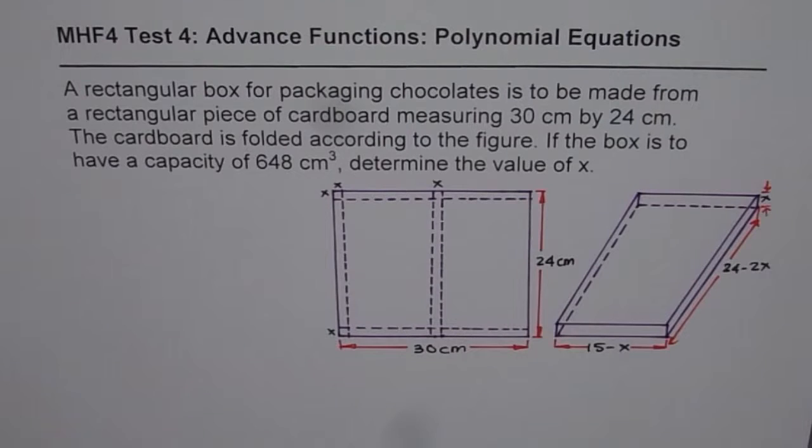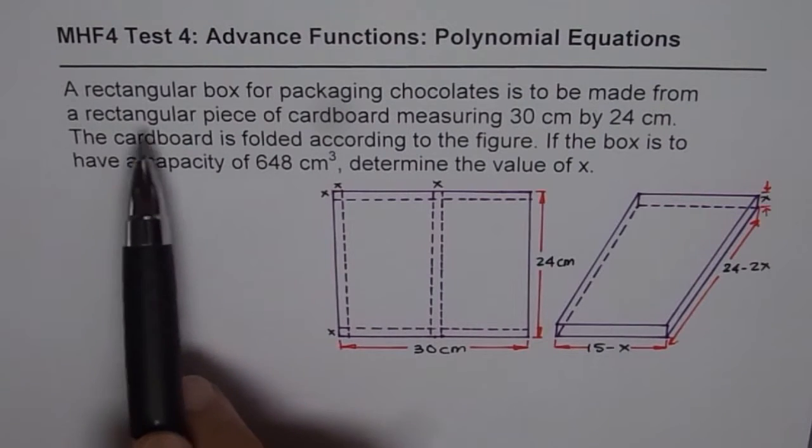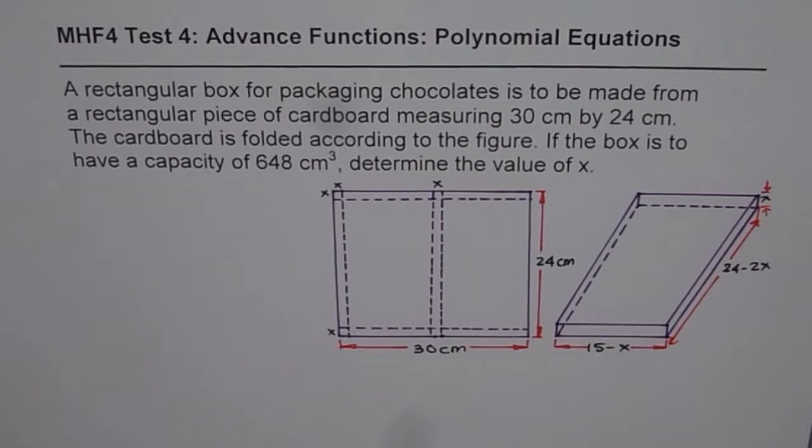Here are some real life situations. For me the real life situation is that I am always running out of time and space. So we have just half a page to solve and a very limited time since you are ready for your test. Here is a quick solution. I'll only give you hints and provide you guidance on how to solve such a real life question. The question here is, a rectangular box for packaging chocolates is to be made from a rectangular piece of cardboard measuring 30 cm by 24 cm. The cardboard is folded according to the figure. If the box is to have a capacity of 648 cm cubed, determine the value of x.